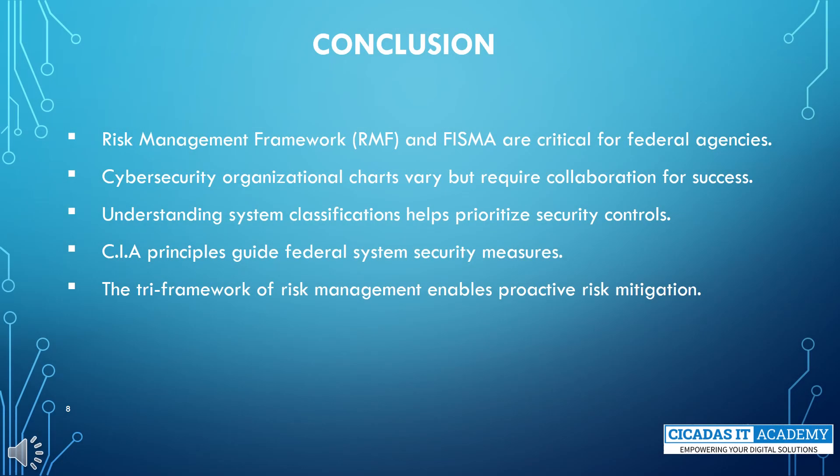The Risk Management Framework, RMF, and FISMA are crucial for federal agencies to effectively manage risks and ensure the security of information systems. Cybersecurity organizational charts may vary, but collaboration is essential for success. Understanding system classifications helps prioritize security controls, and the CIA principles guide federal system security measures. The TRI framework of risk management enables proactive risk mitigation and ensures the continuous protection of federal information systems.